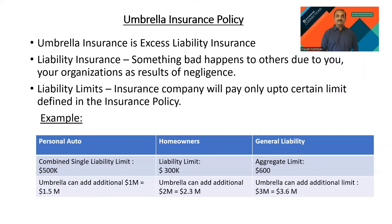The umbrella policy works as an underlying policy to your core policy. If you have a personal auto policy, you can go to the insurance company and say you need an umbrella policy for an additional 1 million. In that scenario, your 500k core policy plus 1 million umbrella will pull your total liability limit to 1.5 million.